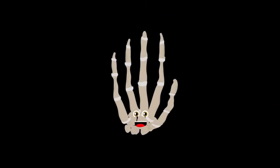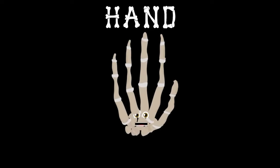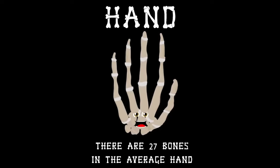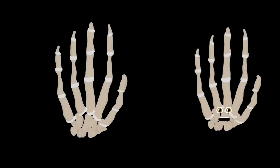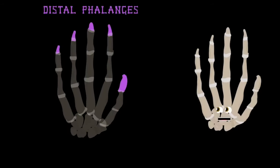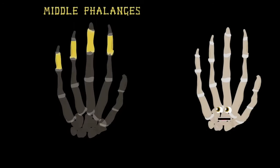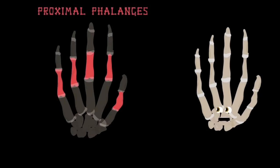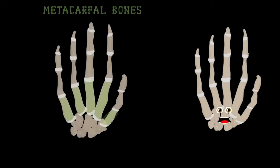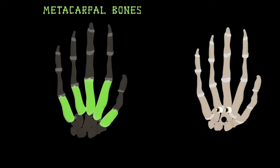How about I lend you a hand and tell you about me? There are 27 bones in the average hand. Let's start with the tips of my fingers — there are five called the distal phalanges. They are attached to the middle phalanges; there are only four of them on the fingers. The proximal phalanges are next — there are five that end your fingers. Feel the back of your hand — these are your metacarpal bones.